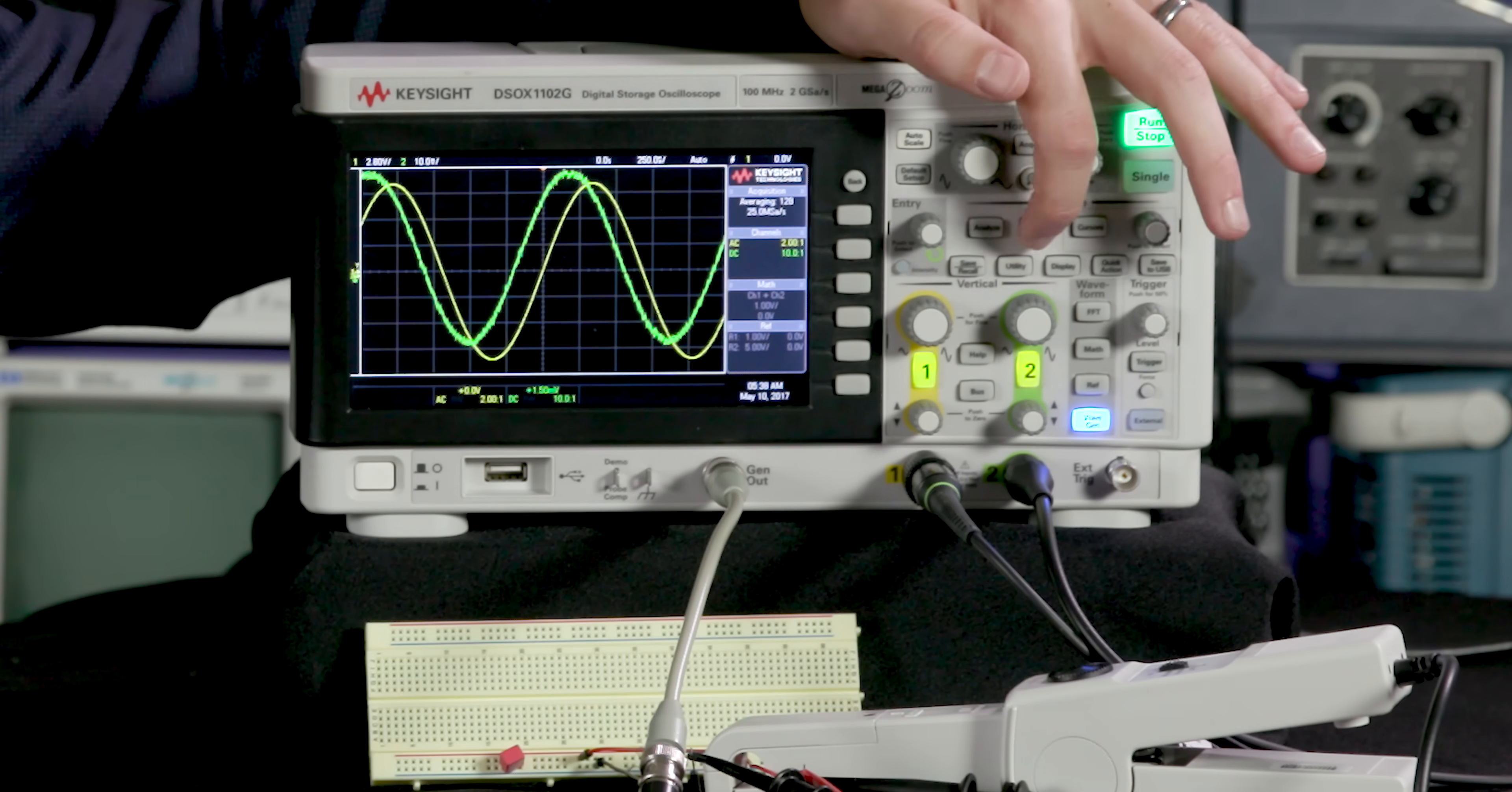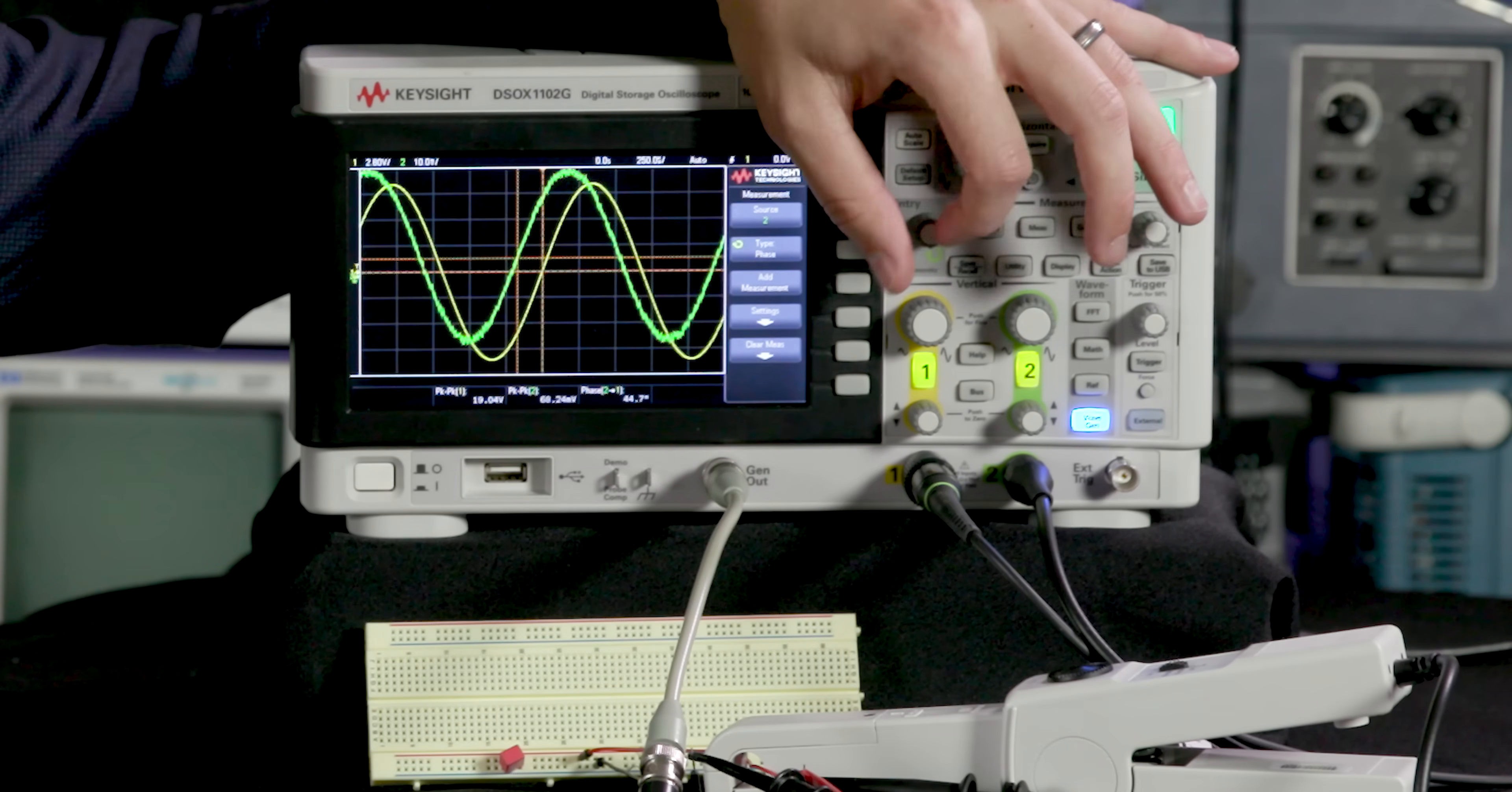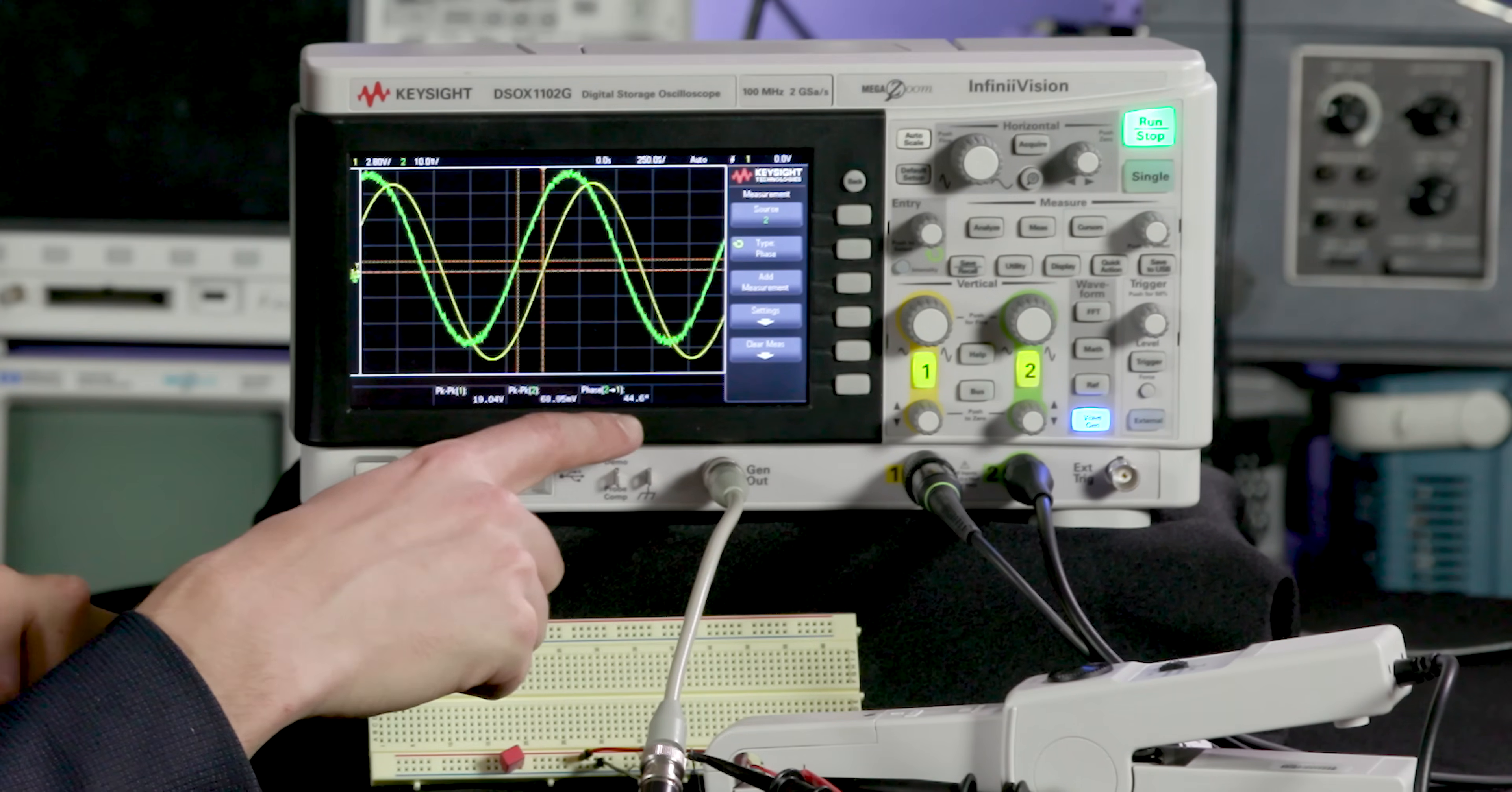And we can use the oscilloscope to measure that, so I'm going to hit measure and I'm going to add a phase measurement, it's all the way at the bottom. And we can see that I'm getting about a 45 degree phase shift, and that's because my capacitor is in parallel with my resistor.